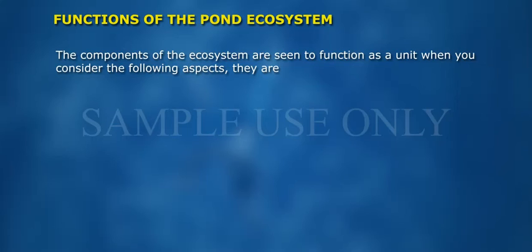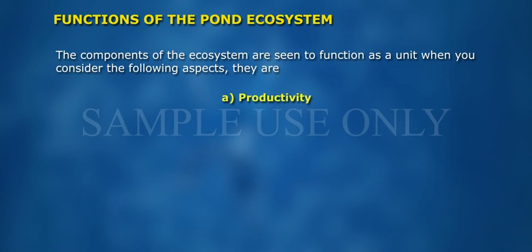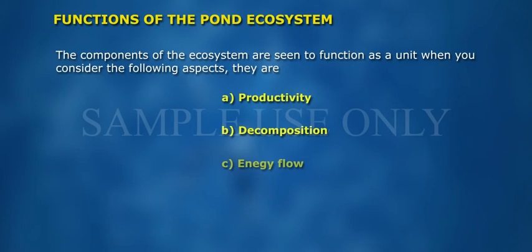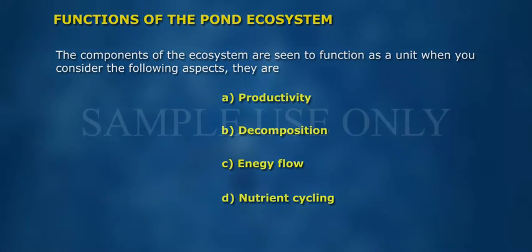The components of the ecosystem function as a unit when you consider the following aspects: A. Productivity, B. Decomposition, C. Energy Flow, and D. Nutrient Cycling.